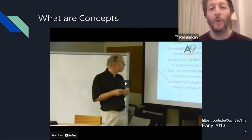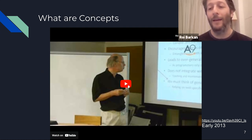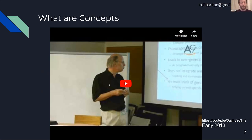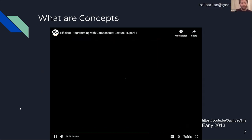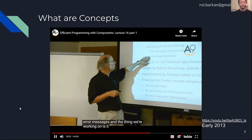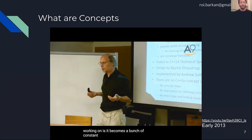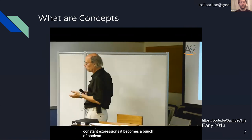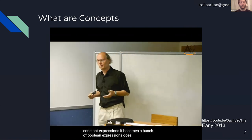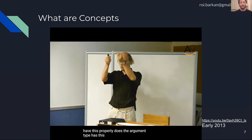Let's get back to early 2013 — Bjarne Stroustrup will tell us in his words what concepts are, at least what he envisioned them to be seven years ago. In the clip: 'The thing we were working on becomes a bunch of constant expressions — Boolean expressions. Does this type have this property? Does the argument type have this property? Has the combination of types got this property?'